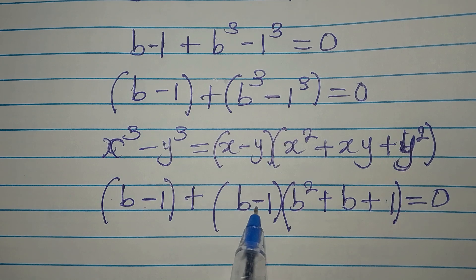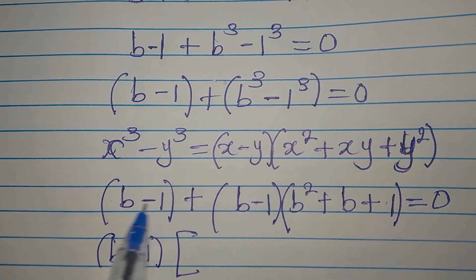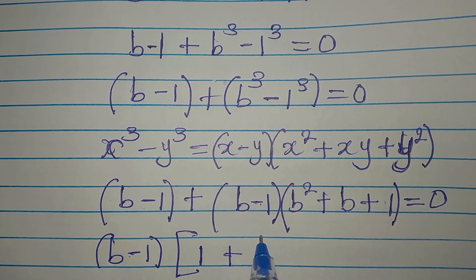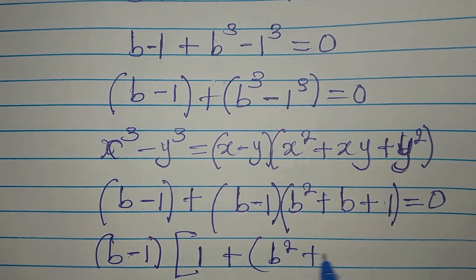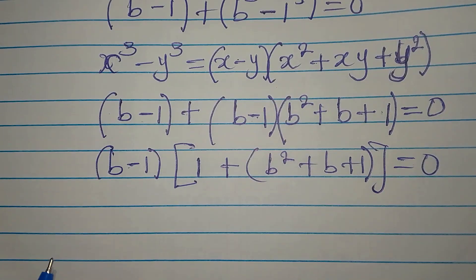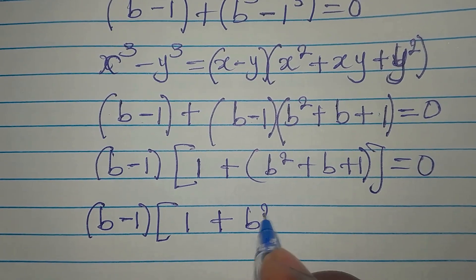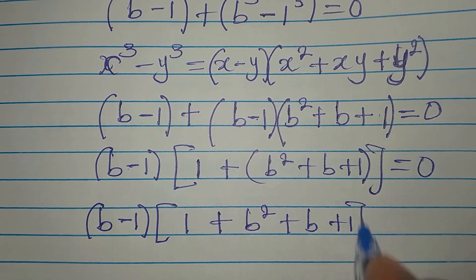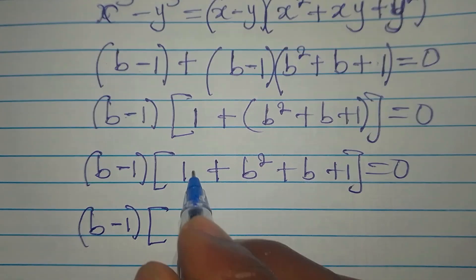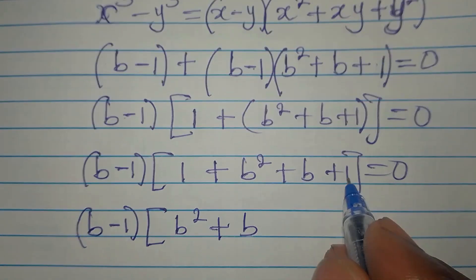Now this b minus 1 and the other b minus 1 are the same thing, so b minus 1 comes out as a common factor. What will be left is 1 plus b squared plus b plus 1, all equal to 0. Opening this out, we have b minus 1 times b squared plus b plus 1 plus 1, which gives b minus 1 times b squared plus b plus 2, equal to 0.